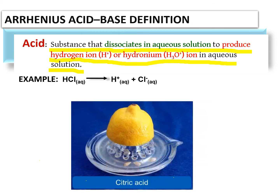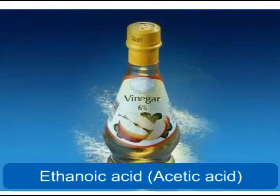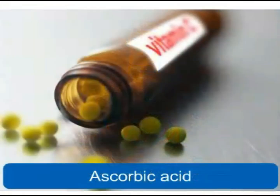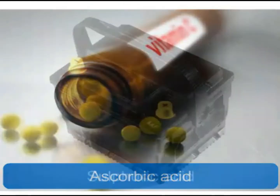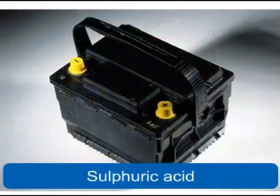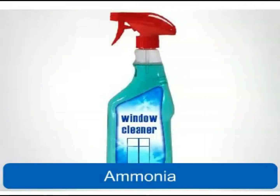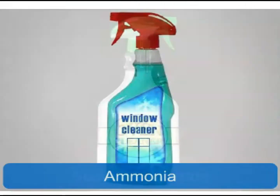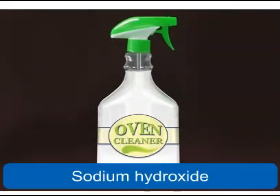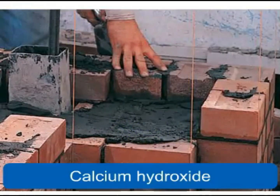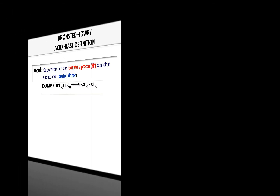For example, hydrochloric acid. The following videos show you various types of acids. According to Arrhenius, a base is a substance that dissociates in aqueous solution to produce hydroxide ion. The following videos show you various types of bases.